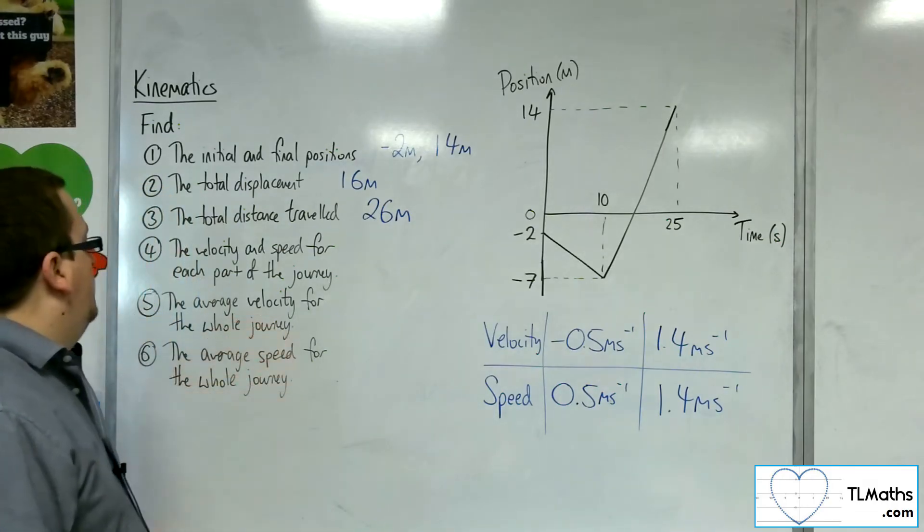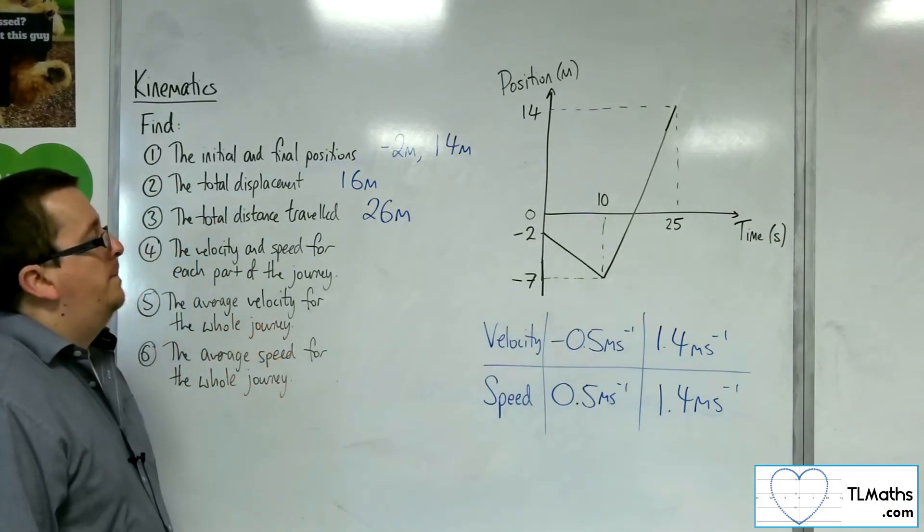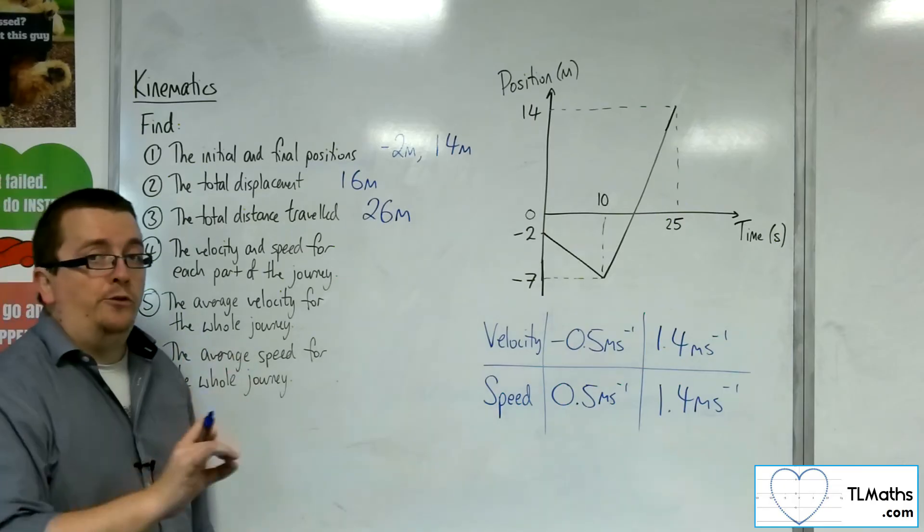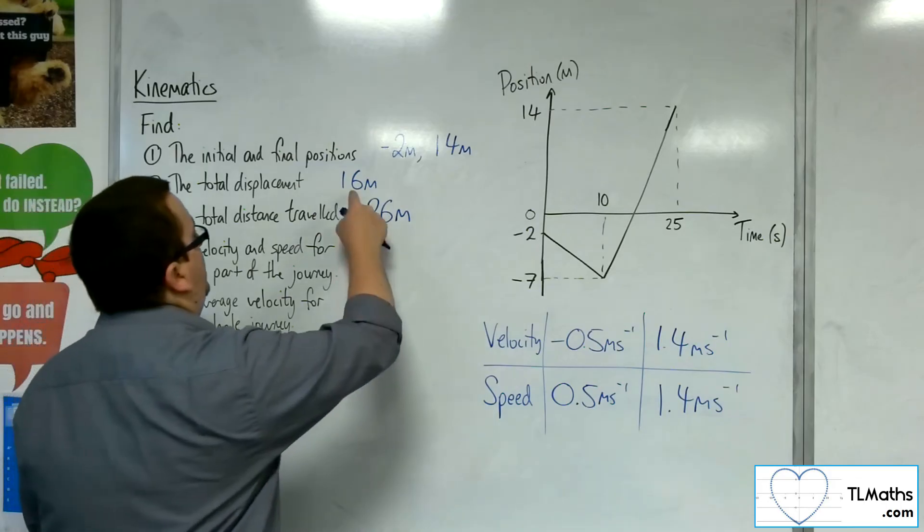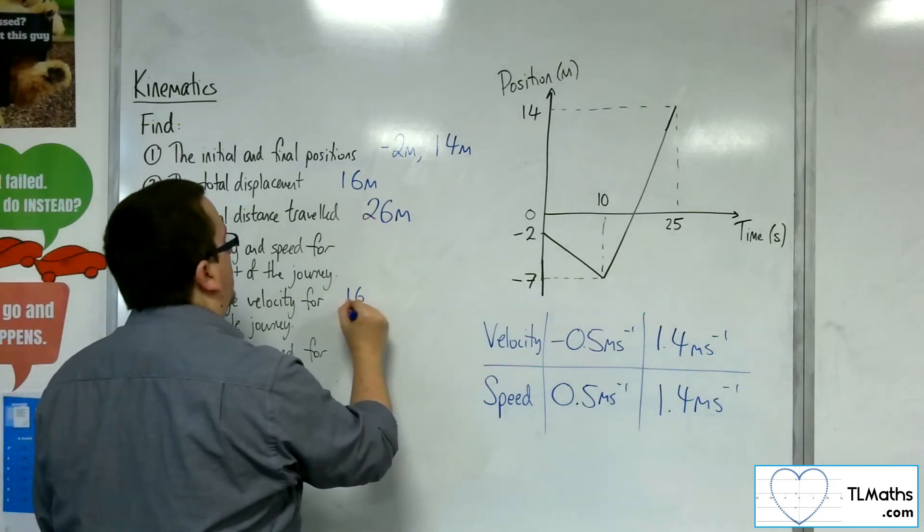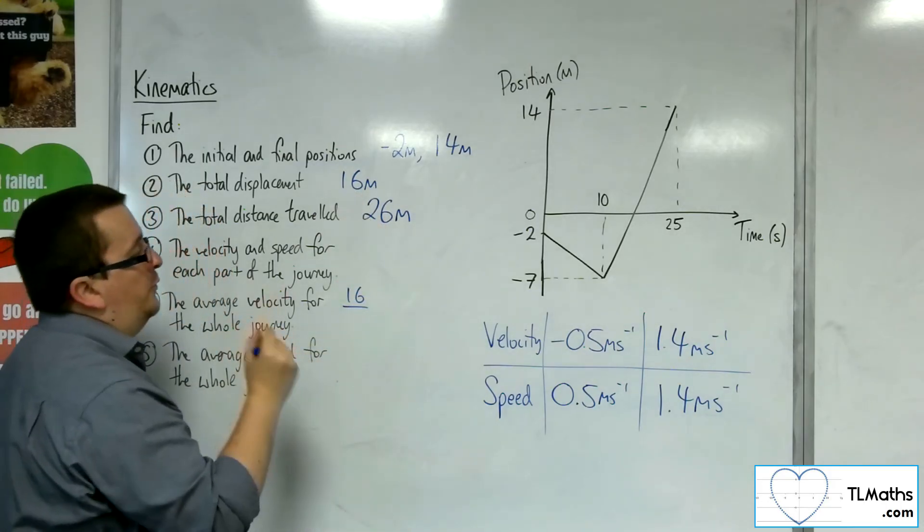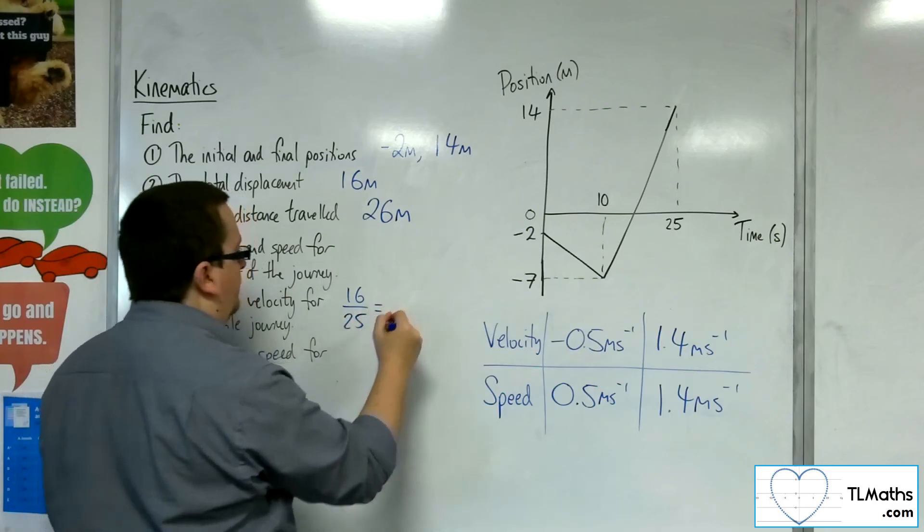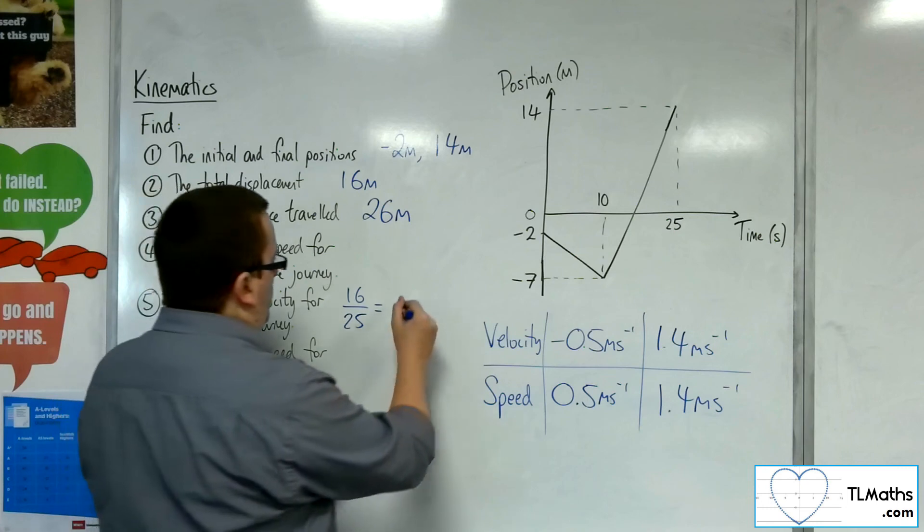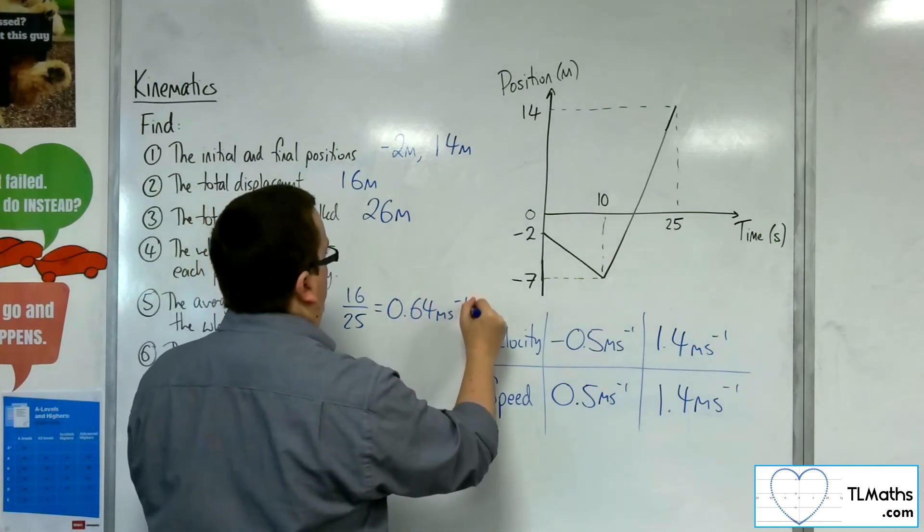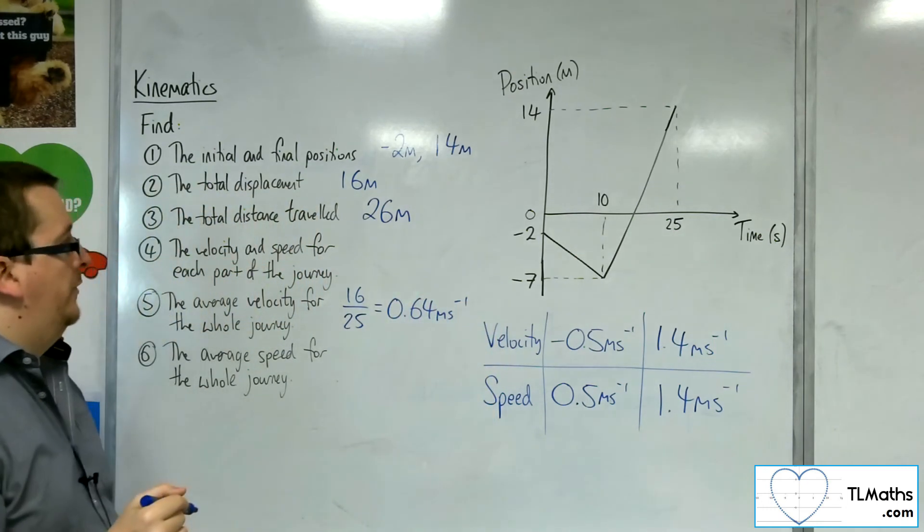The average velocity for the whole journey. The average velocity is the total displacement divided by the total time. So that would be 16 divided by total time, 25. So 16 divided by 25 is 0.64 metres per second. That's the average velocity.